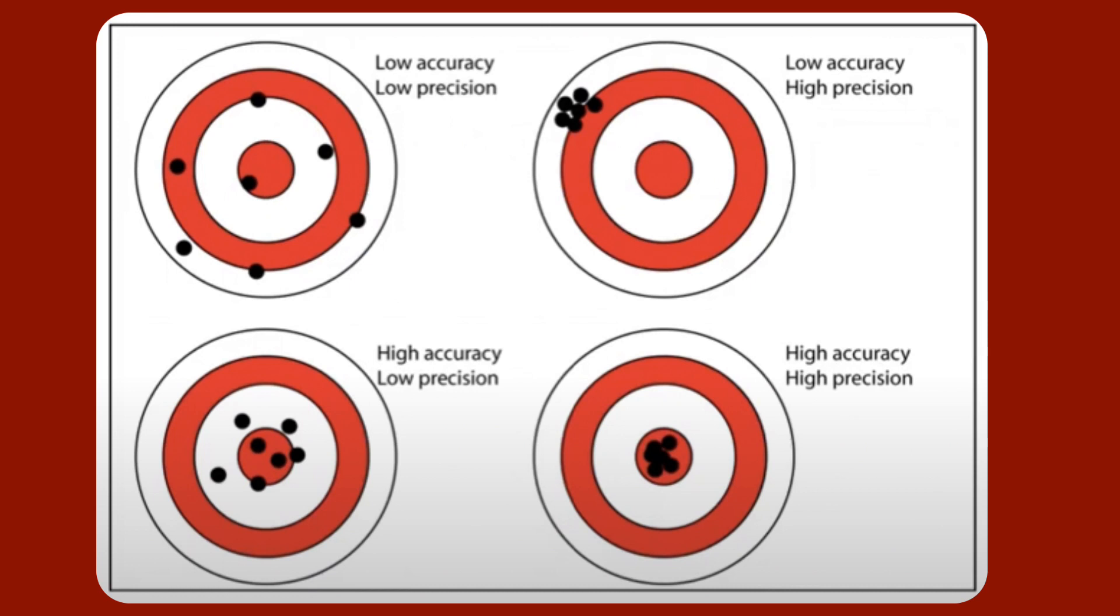So let's use the analogy of a bullseye. We're going to assume that we really do want to be aiming for the center of the bullseye. That means it's going to be the most accurate if you actually hit the center. So in this bottom right hand corner you can see that all of the shots are close together and in the center. That means it's going to be both highly accurate and highly precise.